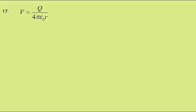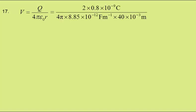Well, potential is given by Q over 4 pi epsilon 0 r. It is a scalar quantity, so we can simply add. And this gives 360 volts. This is answer C.